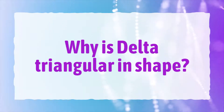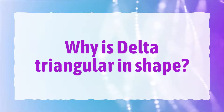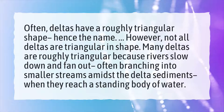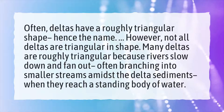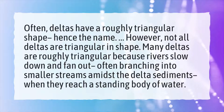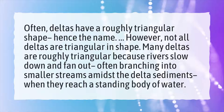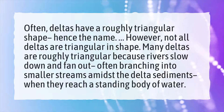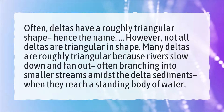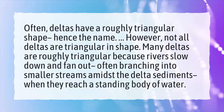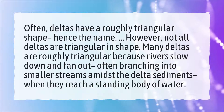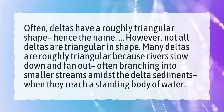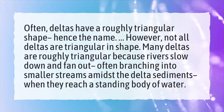Why is a delta triangular in shape? Often, deltas have a roughly triangular shape, hence the name. However, not all deltas are triangular in shape. Many deltas are roughly triangular because rivers slow down and fan out, often branching into smaller streams amidst the delta sediments when they reach a standing body of water.